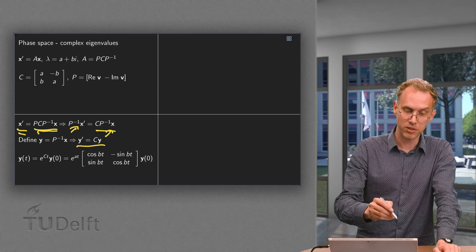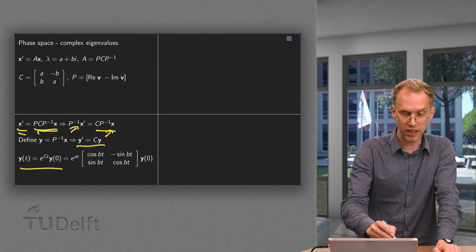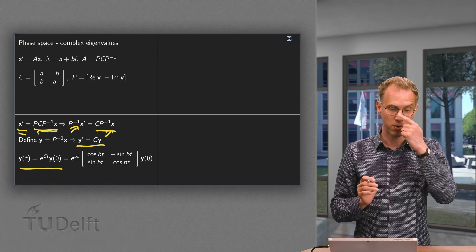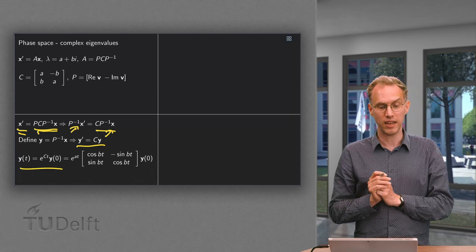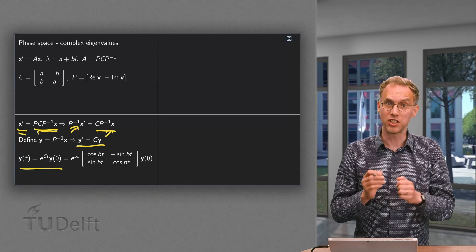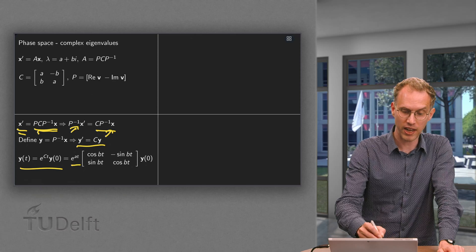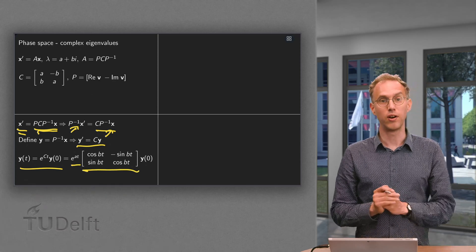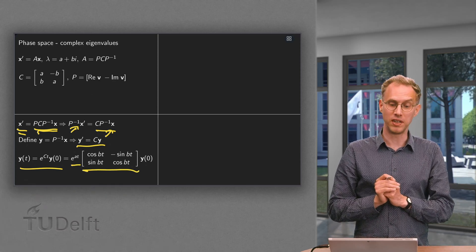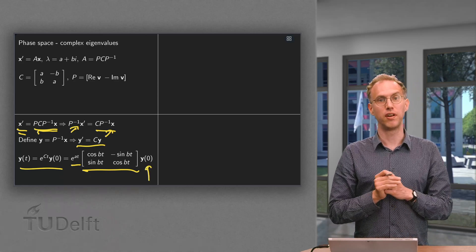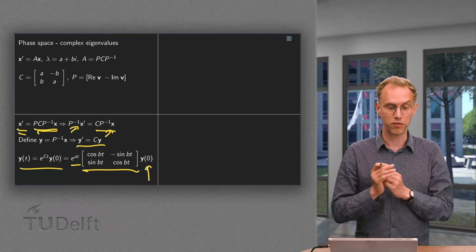Now we can write down the solution y of t equals e to the power ct times y of 0. And we know how to compute e to the power ct because it's a scaling rotation matrix. So e to the power ct equals e to the power at times this rotation matrix in terms of b and time, times the initial value in terms of y.